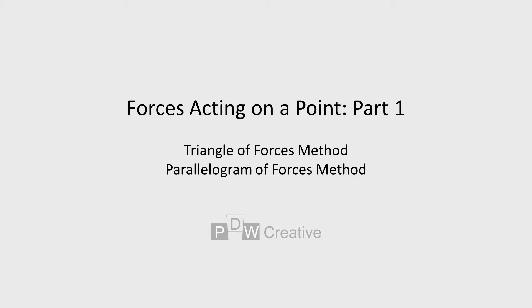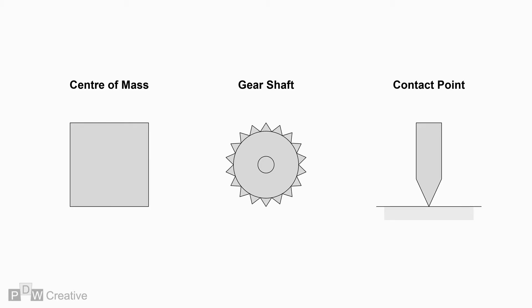When a force acts on an object, it is often transmitted to a focal point. A focal point could be considered the centre of mass of a free-moving object, the midsection of a gear shaft under load, or a pinhead point of contact against the surface. The force transmission could be focused in a single direction, or multiple forces could be at play which could require balancing or overriding in a particular direction.